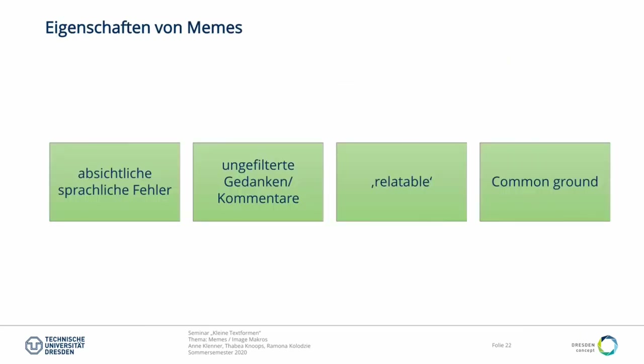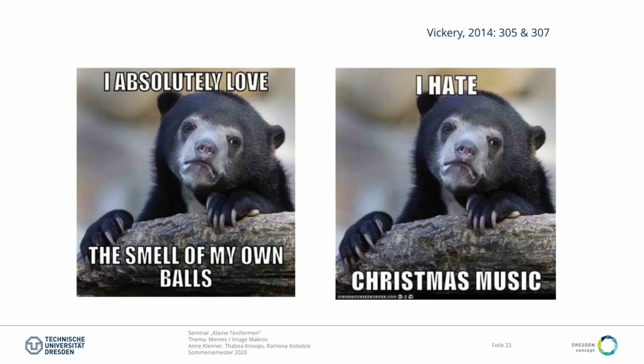Einige Eigenschaften von Internet-Memes allgemein und Image Makros im Speziellen: Einige Memes weisen absichtlich sprachliche Fehler auf. Durch Anonymität im Netz können Gedanken ungefiltert dargestellt werden. Memes sind oft relatable – man kann nachempfinden, was der Autor meint. Und oft ist ein Common Ground, also ein gemeinsames Kontextbewusstsein, vonnöten, um überhaupt kommunizieren zu können. Dazu zwei Beispiele: auf der rechten Seite soll es relatable sein, auf der linken Seite zeigt sich ganz deutlich die Anonymität – außerdem muss man wissen, dass es sich um den Confession Bear handelt, sonst ist es nicht eindeutig.